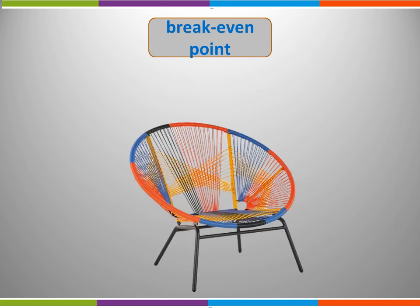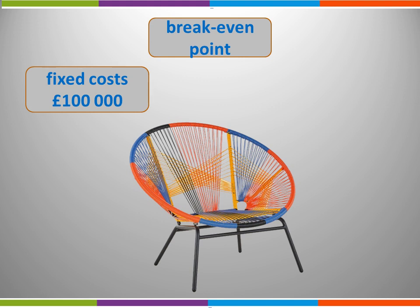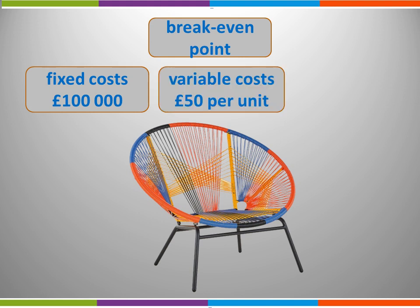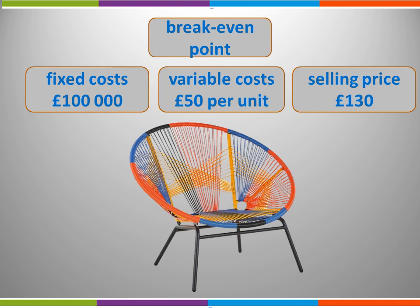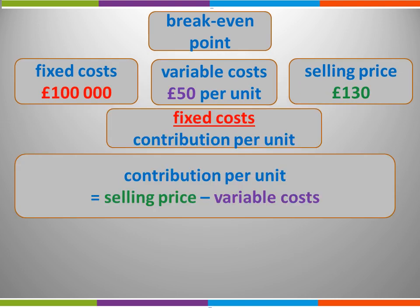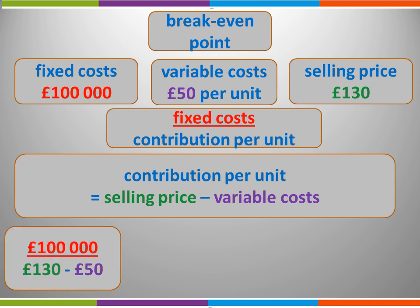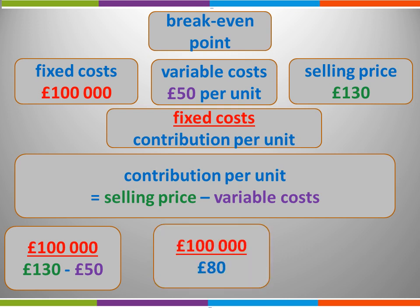Let's look at a numerical example. Assume a business makes chairs. It has fixed costs of £100,000, variable costs of £50 per unit, and a selling price of £130. Using the formula, we place £100,000 on top, then calculate contribution per unit: £130 minus £50, giving us £80. So we have £100,000 divided by £80, which tells us the breakeven point is 1,250 units — in this case, 1,250 chairs.